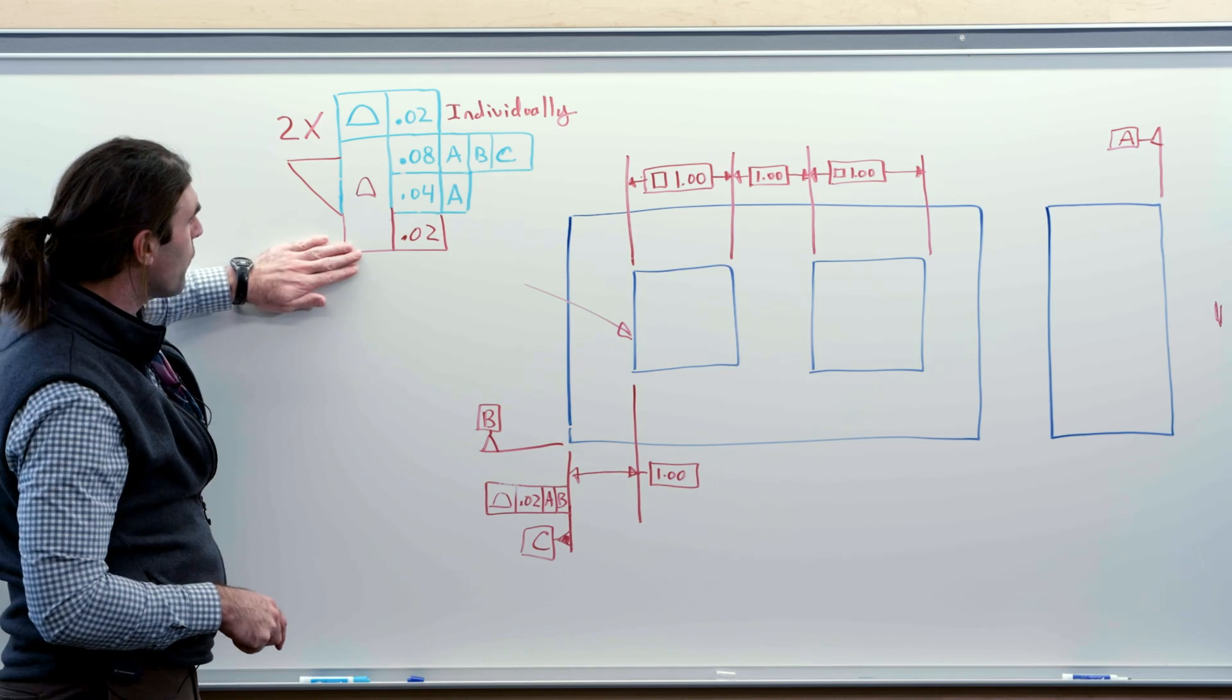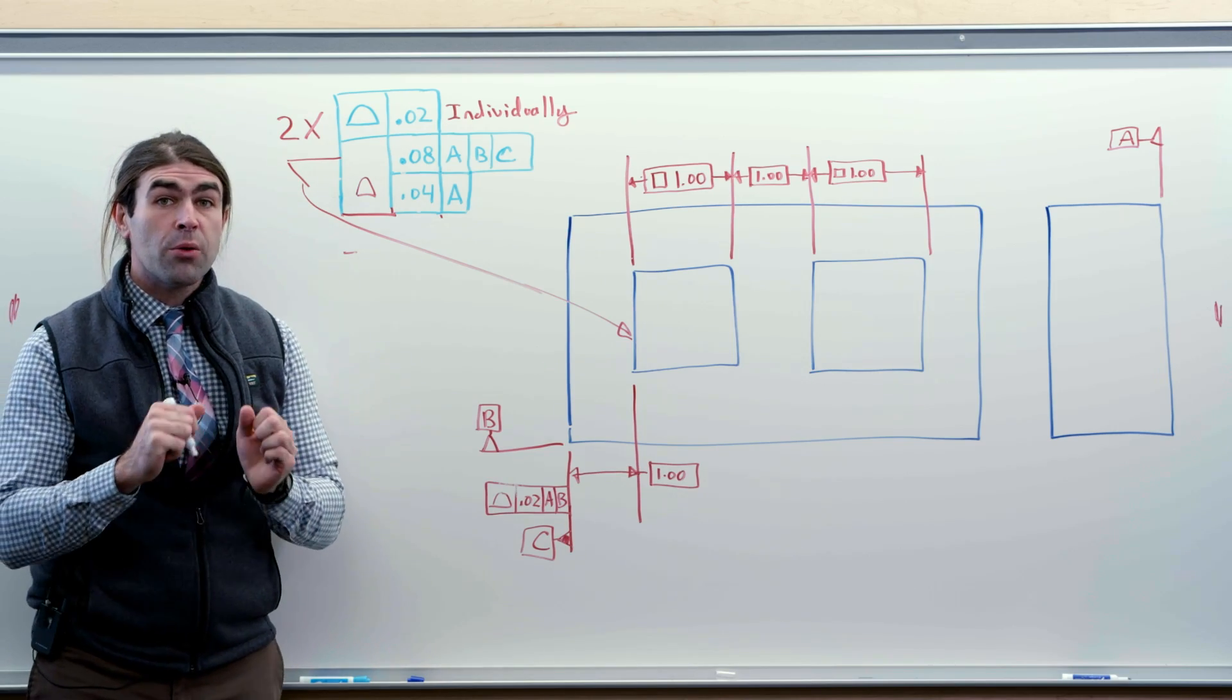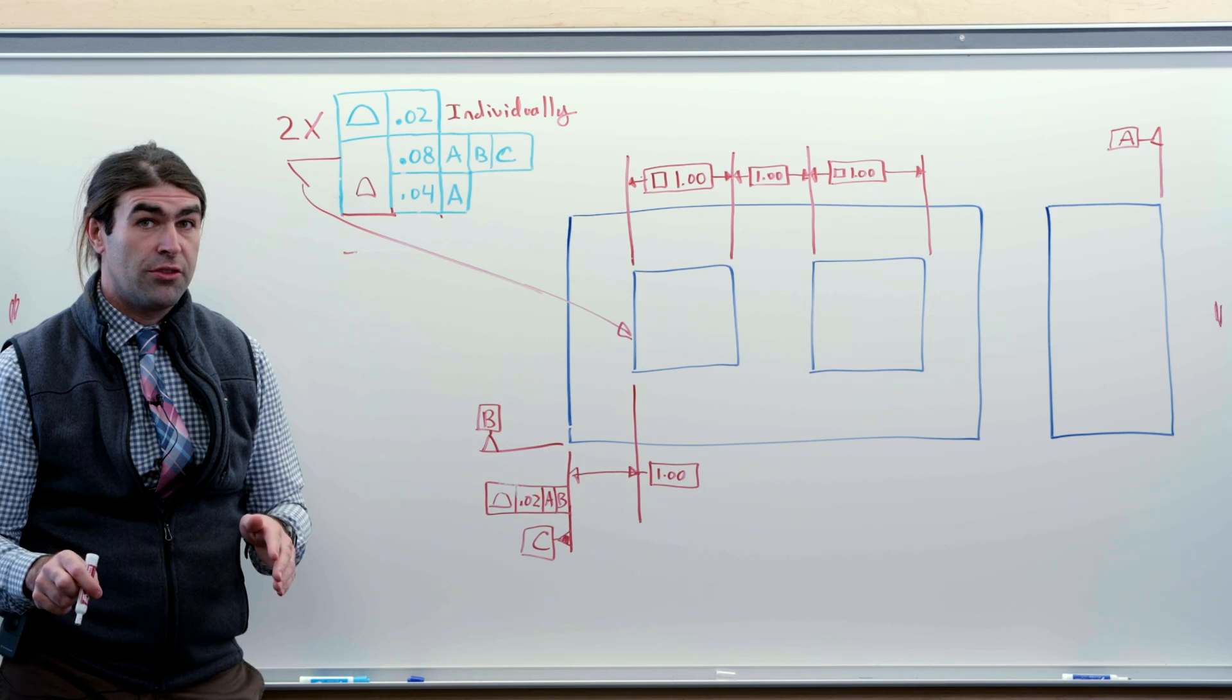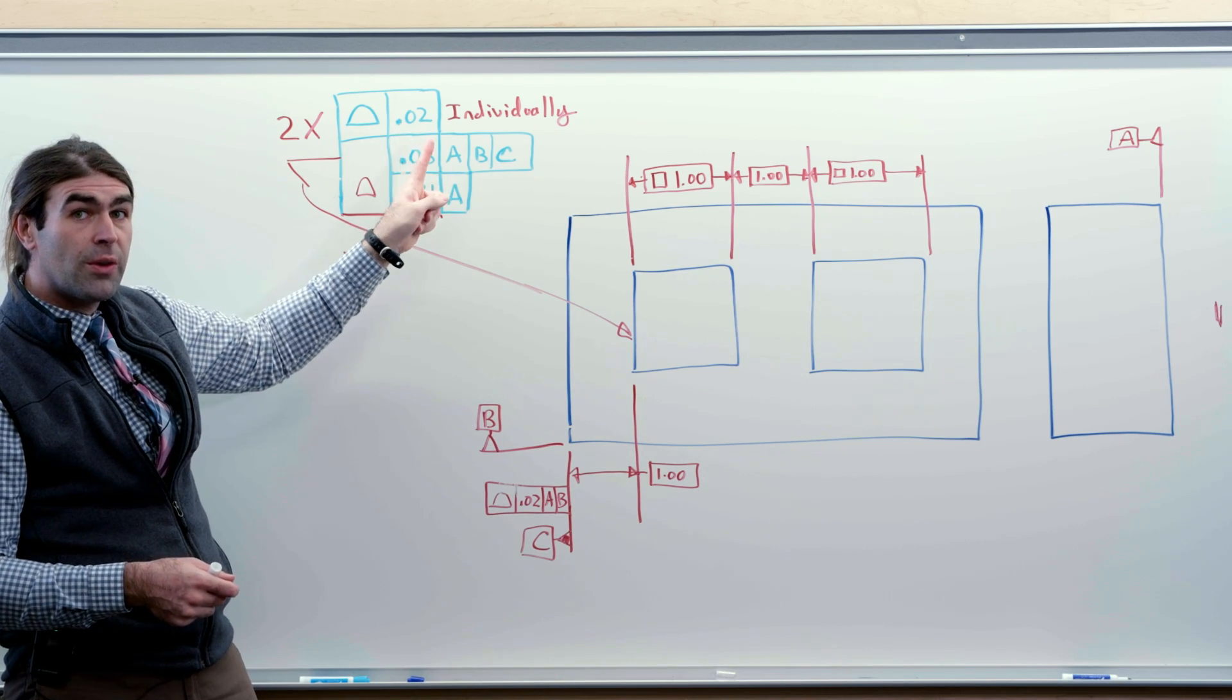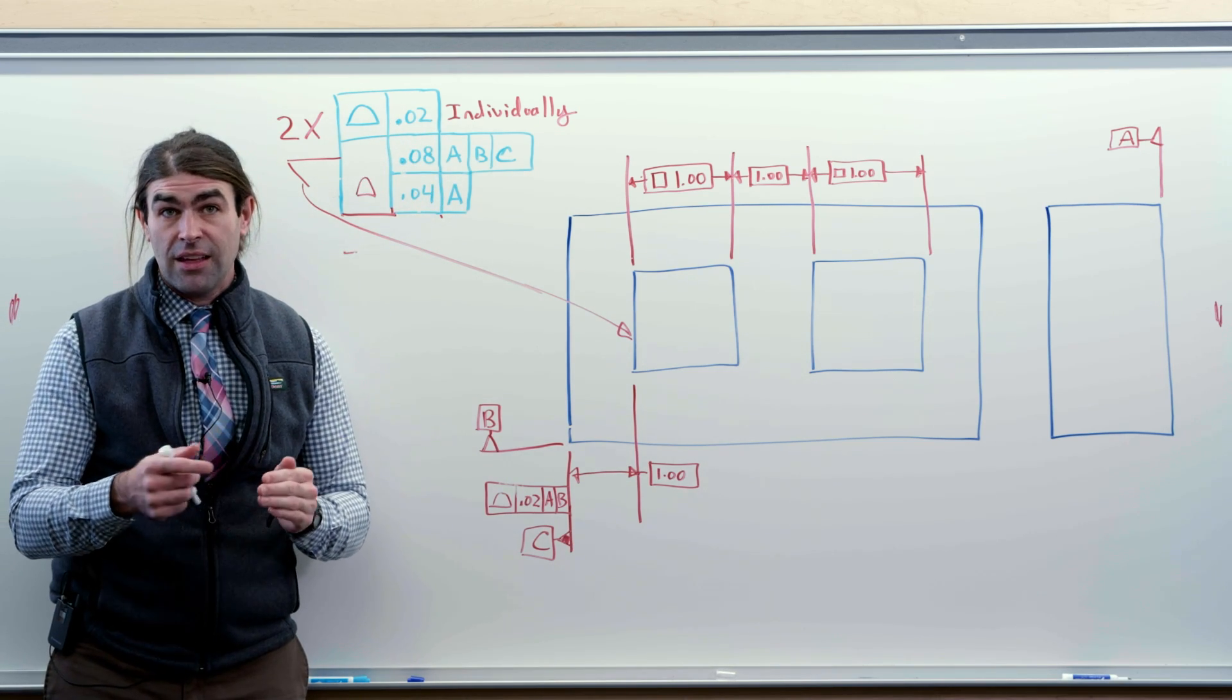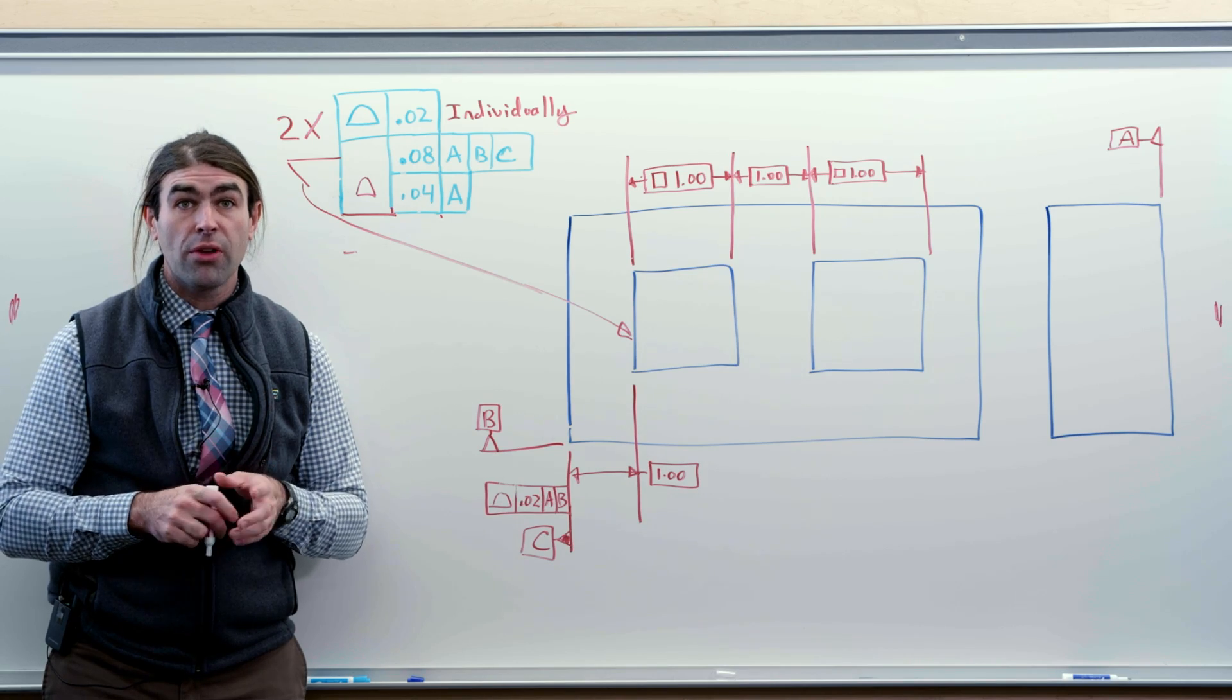Now, if we don't do this, and we go back to how I had it at first, 20 thousandths individually releases this basic dimension requirement. That's all individually means. It means we're just checking each of these squares to make sure the form, and this is also controlling the size, is within 20 thousandths. So it's going to affect the MMC and the LMC of each of these. That's going to tell you what part might fit within one of those holes.